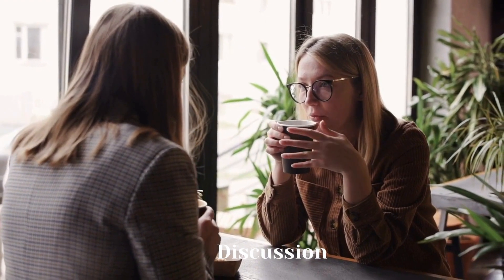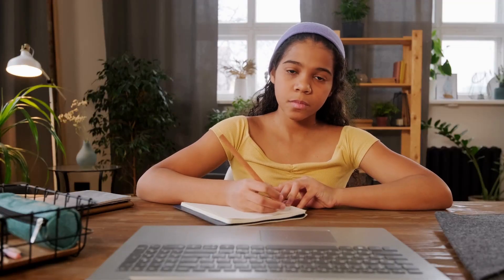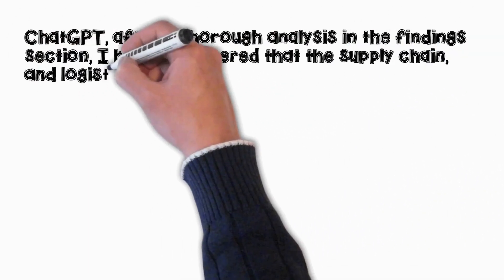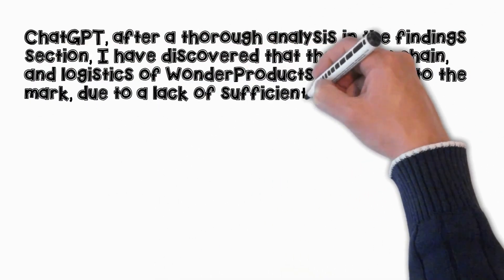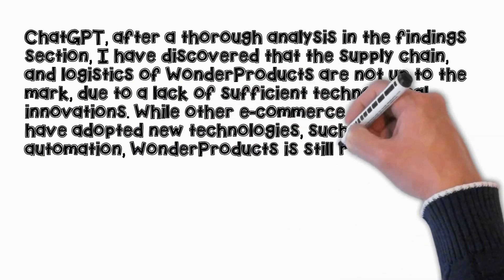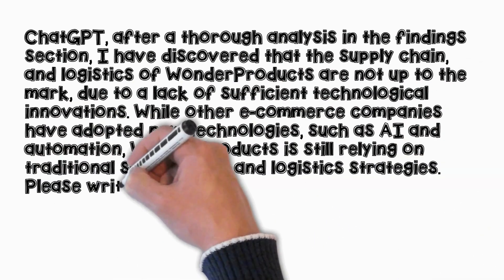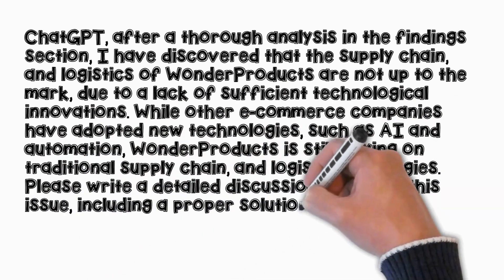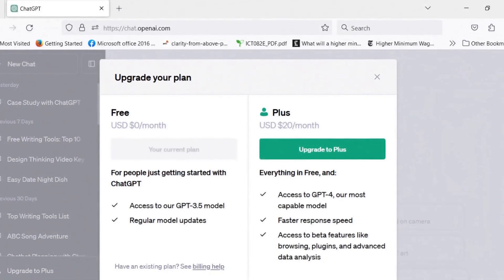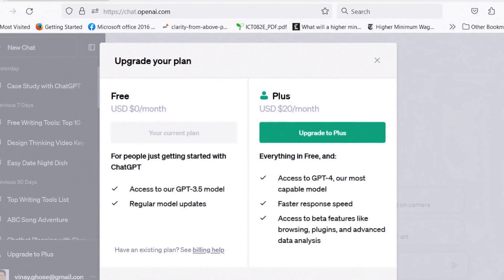The Discussion part is the main part of your case study, so keep it larger than other parts. Identify and provide solutions to the issues, while briefly outlining each alternative solution, and evaluate them in terms of advantages and disadvantages. You can use this prompt: 'ChatGPT, after a thorough analysis in the findings section, I have discovered that the supply chain and logistics of Wonder Products are not up to the mark due to a lack of sufficient technological innovations. While other e-commerce companies have adopted new technologies such as AI and automation, Wonder Products is still relying on traditional supply chain and logistics strategies. Please write a detailed discussion based on this issue, including a proper solution for its mitigation. Additionally, highlight the advantages and disadvantages of these proposed changes.' Note that the free version of ChatGPT may not give you effective outputs for such large prompts, so I would suggest using the paid version.